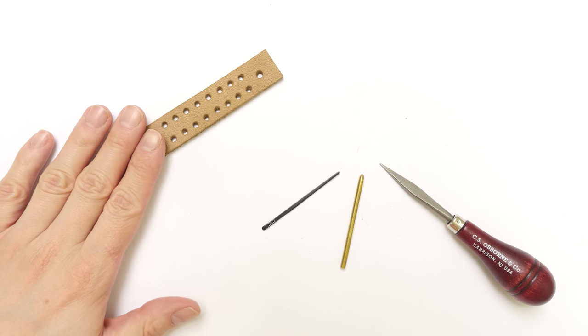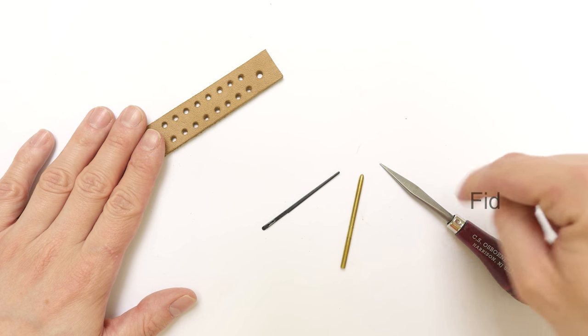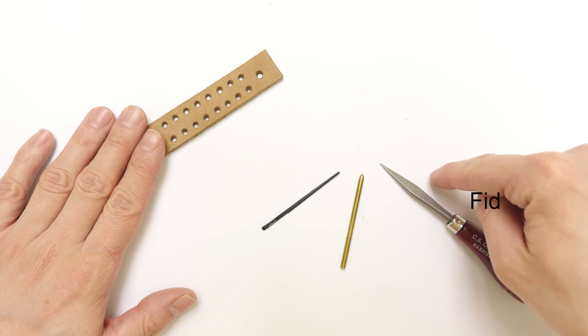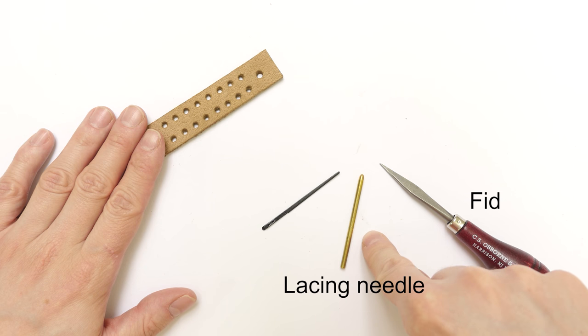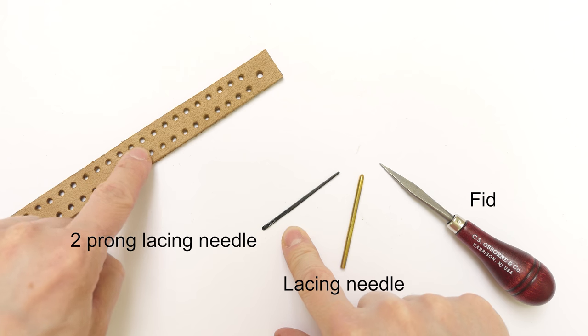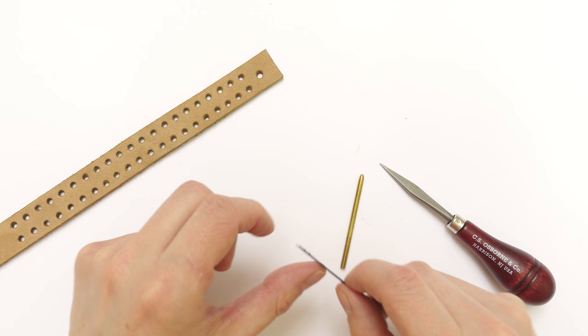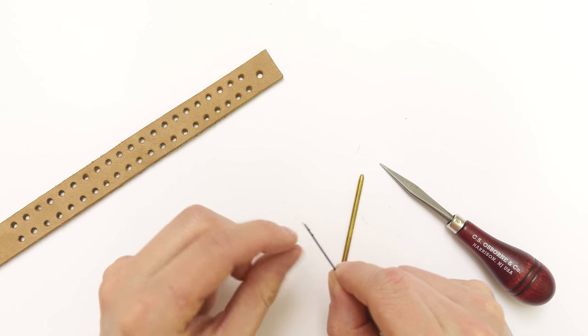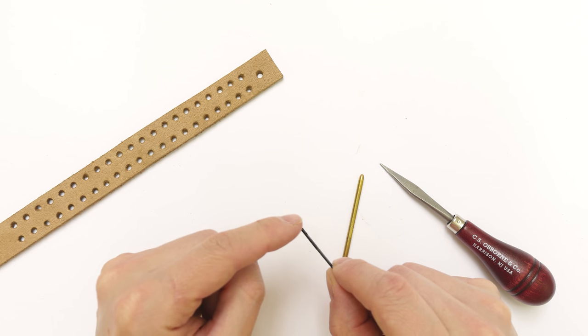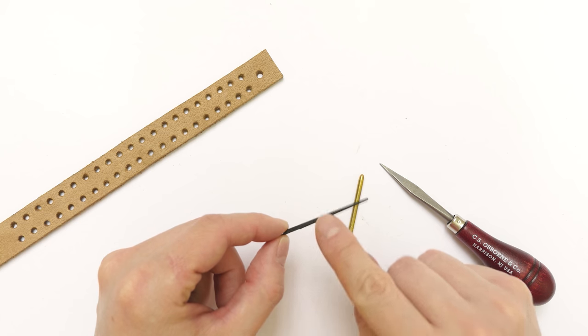The center braid really doesn't require much in the way of tools, but if you have any of these around, they can be helpful. A fid can be used to push through the ends a bit easier. And the same can be done with a lacing needle attached to each of the ends. A more traditional way of lacing or doing a center braid is by using a two-prong lacing needle. Again, you will need two. And these spread apart and have little teeth that hold on to your cord so it doesn't slip out. They are very handy and they can be found in leatherworking shops.